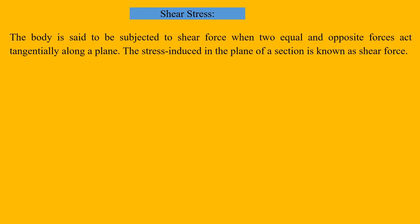Shear stress occurs when a body is subjected to two equal and opposite forces acting tangentially. The stress induced in the element under these conditions is called shear stress. Let us consider an element subjected to two equal and opposite forces P; the stress induced in this element is the shear stress.